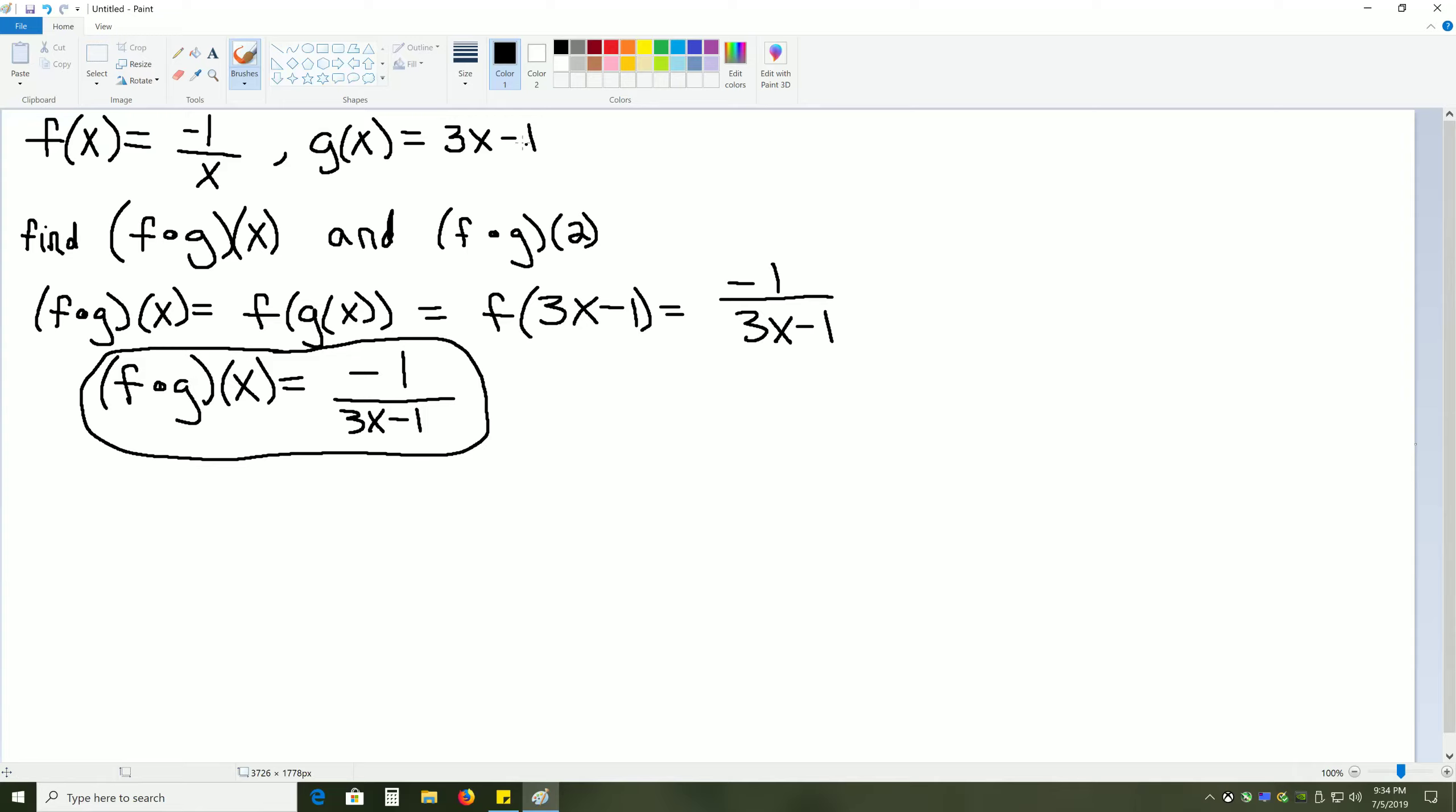So we'll go to g of x. It's 3x minus 1. There's nothing here that would cause bad domain values, so we can immediately skip that step.